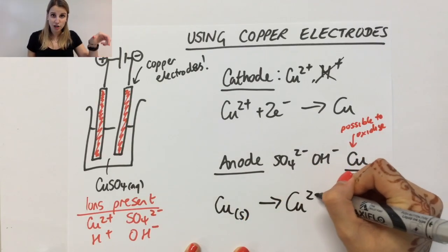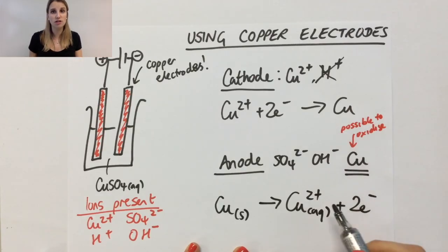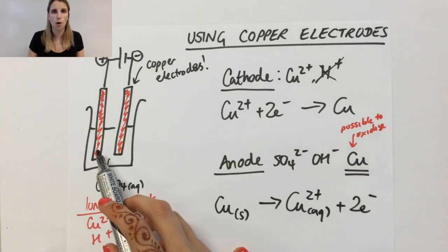This means that the electrode donates copper ions into the solution, and then at the cathode, it can get picked up to turn back into copper metal again.